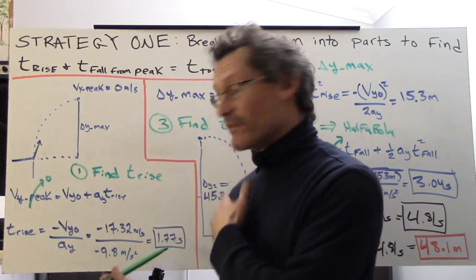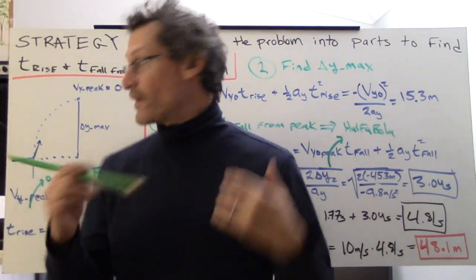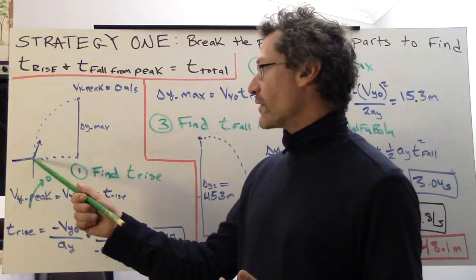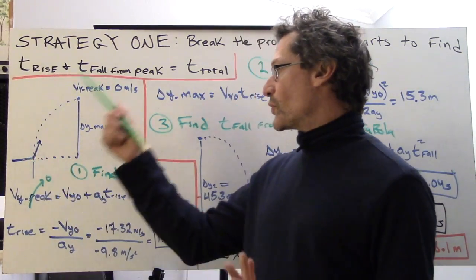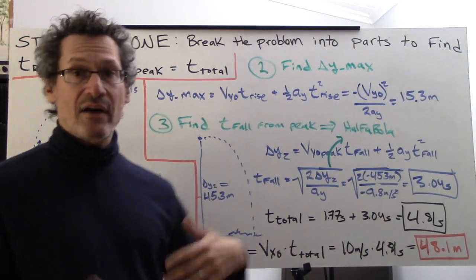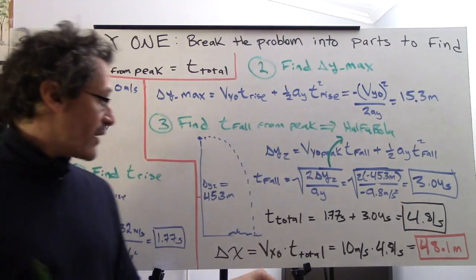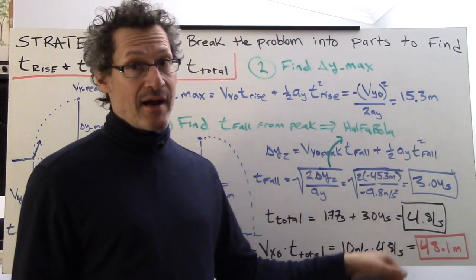We crank this out, we get 3.04 seconds. If we add that to the 1.77 seconds, that's t total. T total for the overall projectile, the croquet ball, is 4.81 seconds till it splashes.